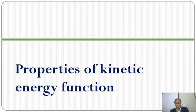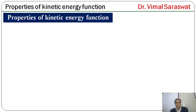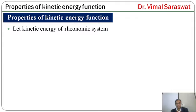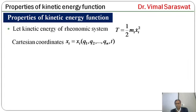Now, properties of the kinetic energy function. Let the kinetic energy of a rheonomic system be T = ½ * mi * xi_dot². The Cartesian coordinates are xi, which is a function of q and t, where q means q1, q2 up to qn and t is time.